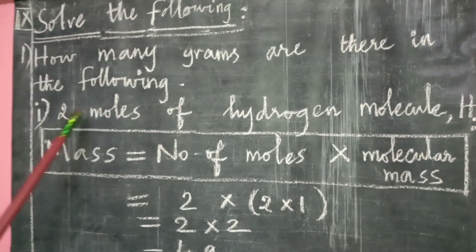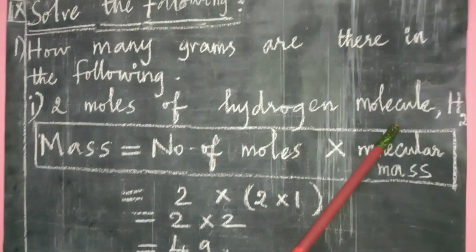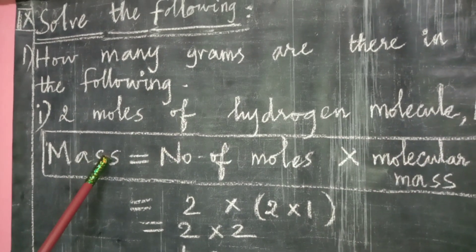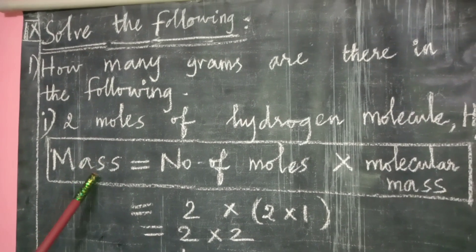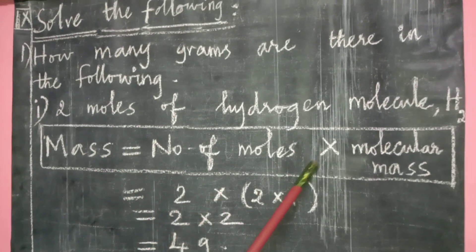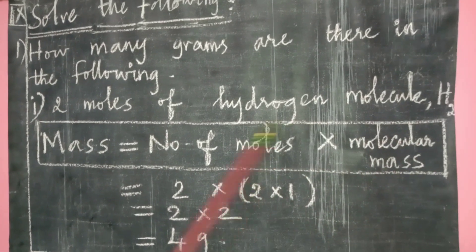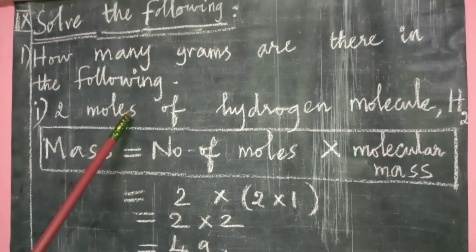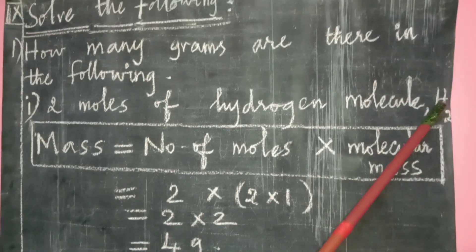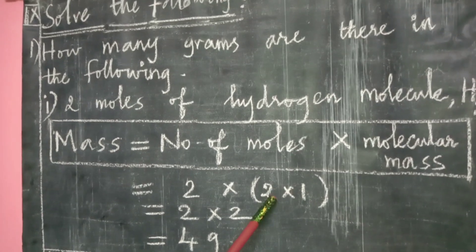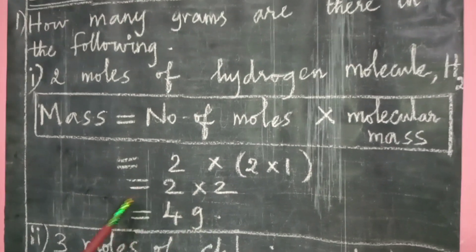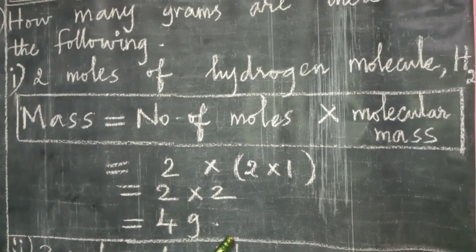First one: 2 moles of hydrogen molecule — molecule means H₂. From the formula, mass is equal to number of moles into molecular mass. Number of moles is 2, and the atomic mass of hydrogen is 1, so molecular mass of H₂ is 1×2 = 2. Therefore, mass = 2×2 = 4 grams.